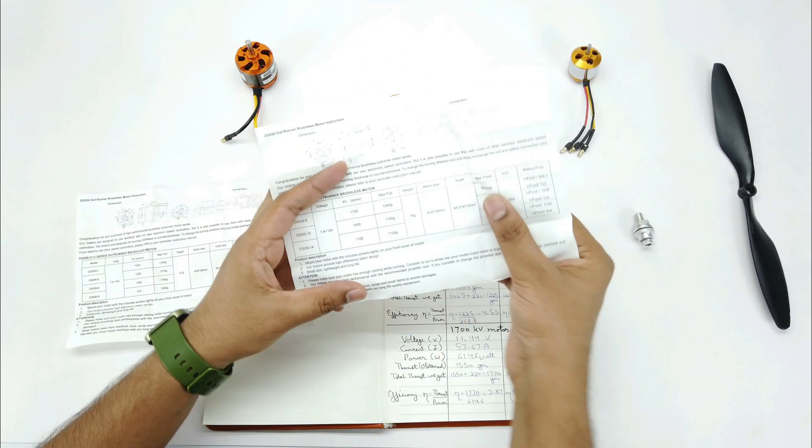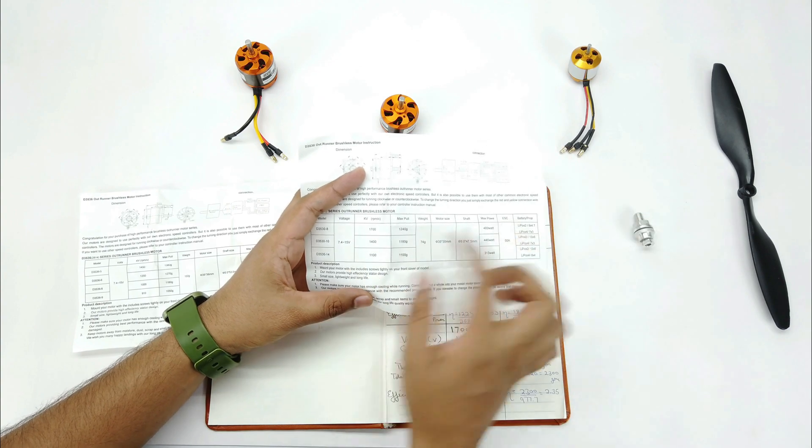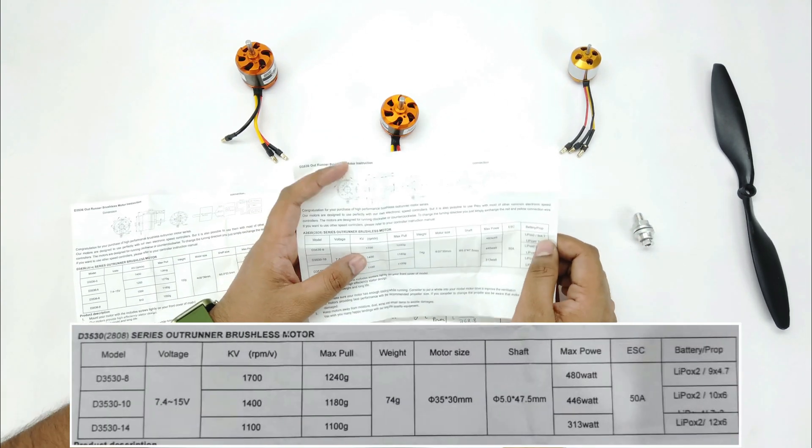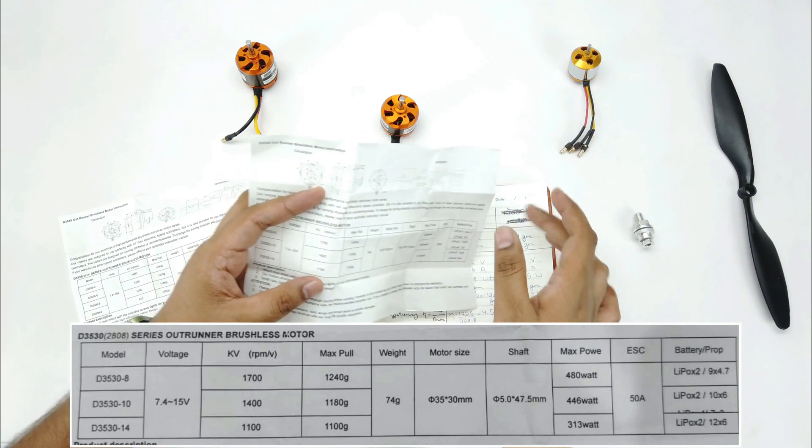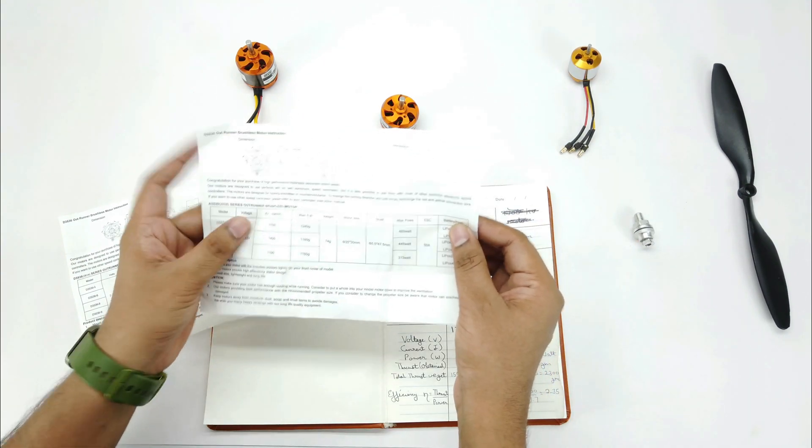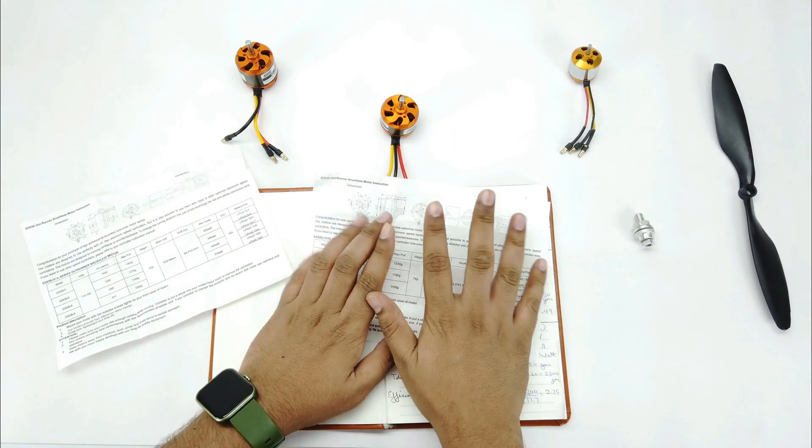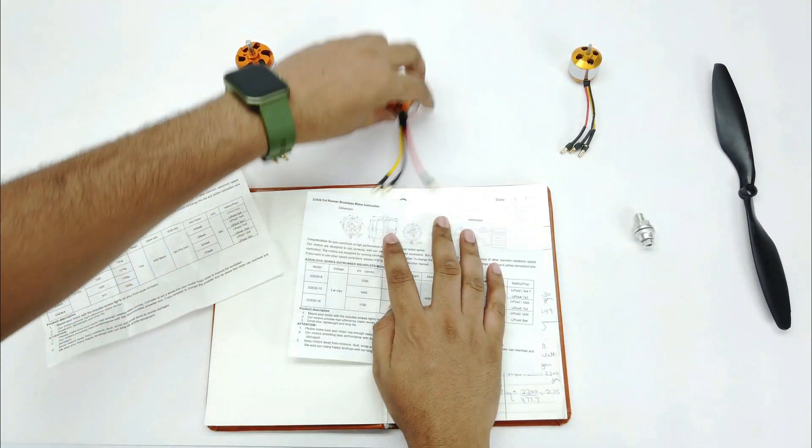So when connected with a 3S battery as per the specification, this motor gives 1240 grams. However, it gives the value when used with 9 inch propeller. But here I have used a 10 inch propeller, so it gave very high thrust of 1770 grams. But I test these motors in extreme cases or push its limit.